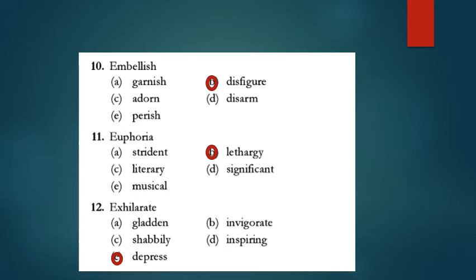Embellish means to make more attractive, to decorate. The meaning of adorn and garnish is the same. So the opposite word will be disfigure. Euphoria means lot of excitement or enthusiasm. Lacking that enthusiasm is lethargy. Strident means very rough. Exhilarate means to make happy, and the opposite will be depraise, because invigorate means to give strength. All others are very positive words, but shabbily is also negative, meaning not very neatly. But the opposite word of exhilarate will be depraise.